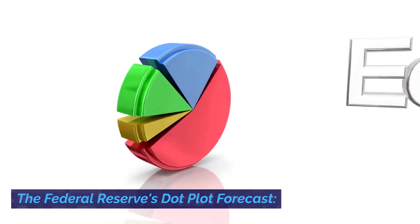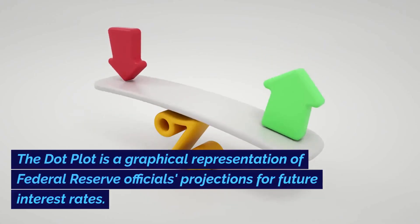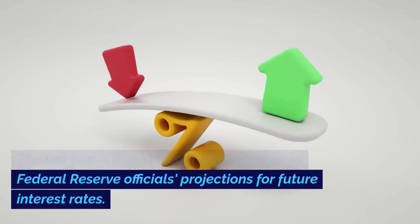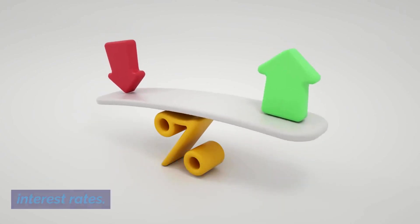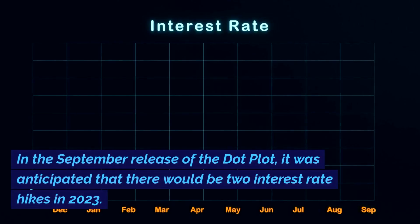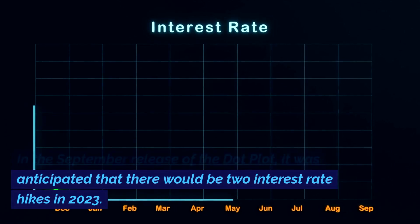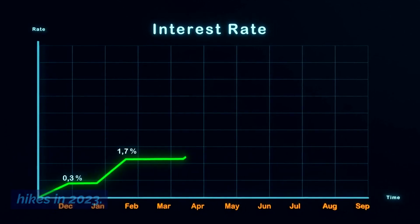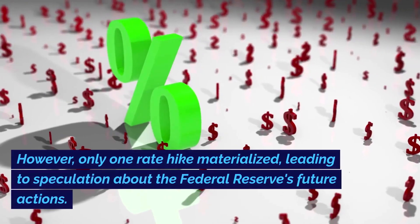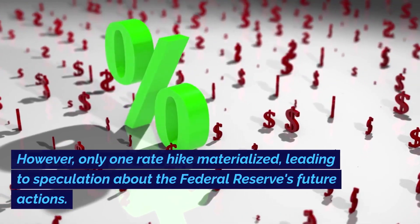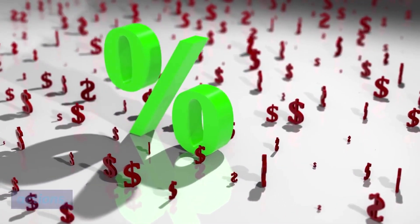The dot plot is a graphical representation of Federal Reserve officials' projections for future interest rates. In the September release of the dot plot, it was anticipated that there would be two interest rate hikes in 2023. However, only one rate hike materialized, leading to speculation about the Federal Reserve's future actions.